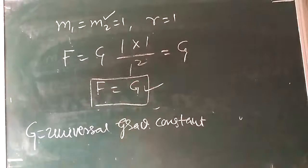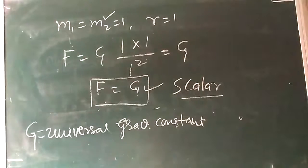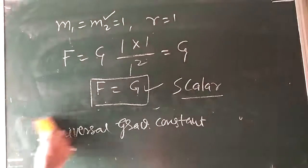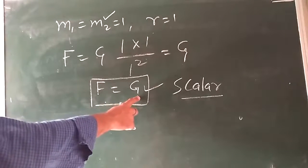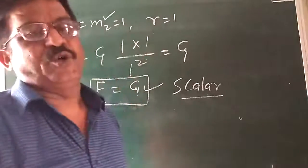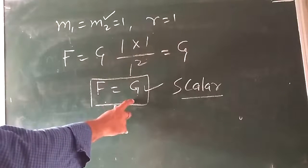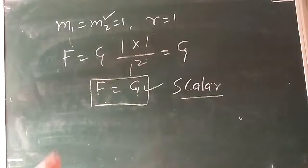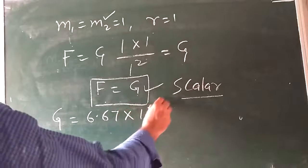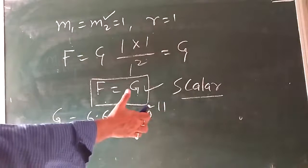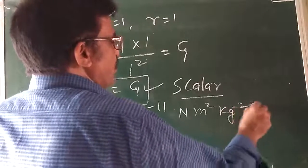The gravitational constant G is a scalar quantity. Its value is the same throughout the universe and it is independent of the nature and size of the bodies, as well as the nature of the medium between them. The value of G in SI units is 6.67 × 10⁻¹¹ N·m²·kg⁻².